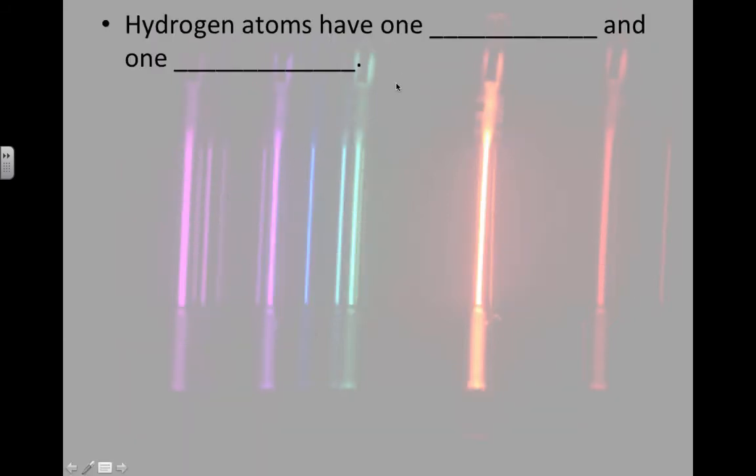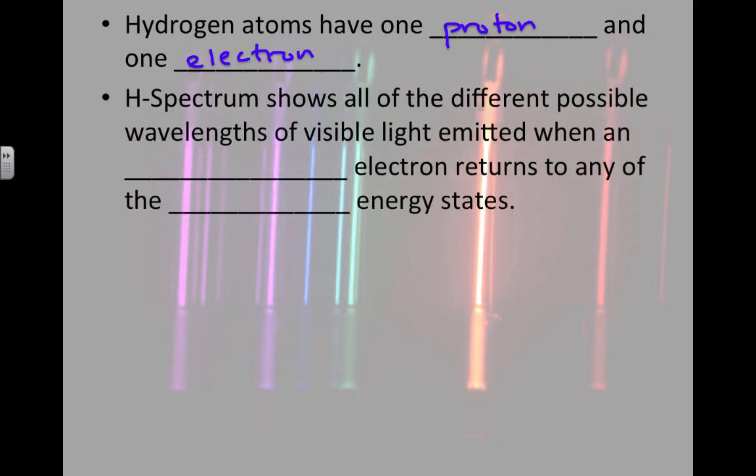The hydrogen atoms are pretty simple. They have only one proton and they have one electron. The hydrogen spectrum shows all of the different possible wavelengths of visible light that are emitted when an excited electron returns to any of the lower energy states.